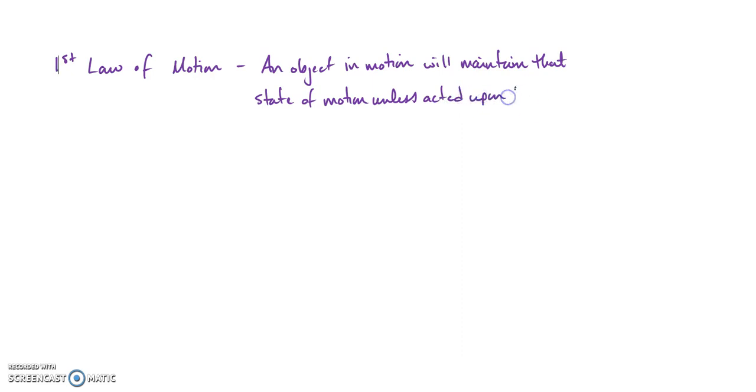So Newton's first law of motion states, let me write this out, first law of motion. Now this is the one you've probably heard of where it says an object in motion stays in motion, blah blah blah. I have a slightly different definition. So I say an object in motion will maintain that state of motion unless acted upon by an outside unbalanced force.